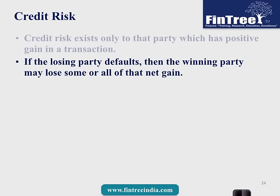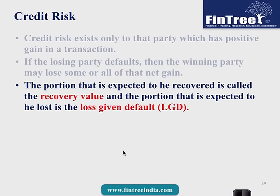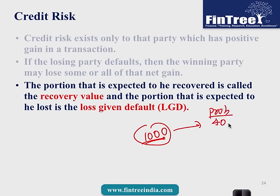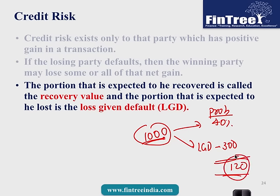If the losing party defaults, the winning party may lose some or all of that net gain. For example, you buy a bond with face value of 1000. Probability of default is 40% — also called the hazard rate, because an organization cannot default more than once. If loss given default is 300, that means in a default you lose 300 out of 1000. Expected loss equals probability of default times loss given default: 300 × 40% = 120.